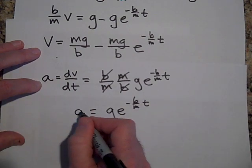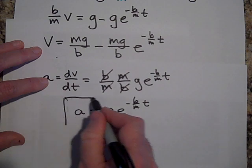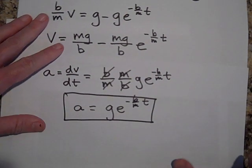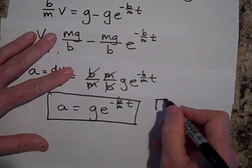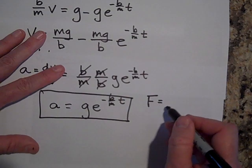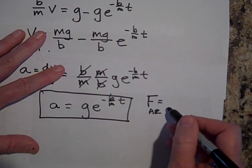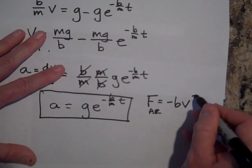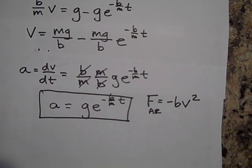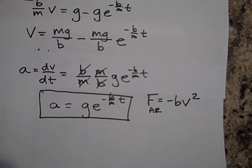Incidentally, this math is good for low speeds. For high speeds, the force due to air resistance is more closely approximated by negative b times v squared. The force really picks up — when you're going fast, the air resistance force gets a lot greater.